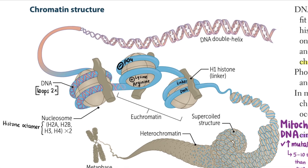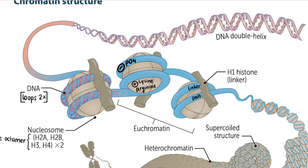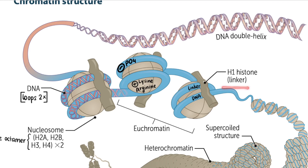The histone has a positive charge because of lysine and arginine amino acids, and the DNA itself has a negative charge from the phosphate groups. Negative attracts positive, so they stay bound together. But you need a cellotape here to reinforce everything — that is what the linker DNA is. It's a piece of tape that basically tapes the DNA to the histone. This whole open structure is called euchromatin.